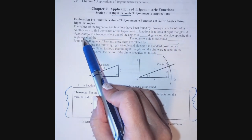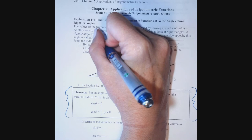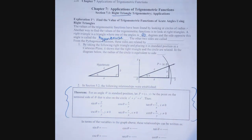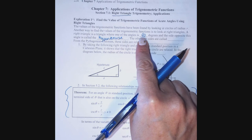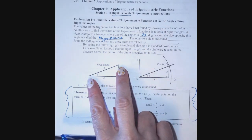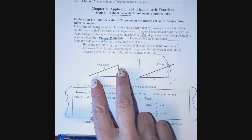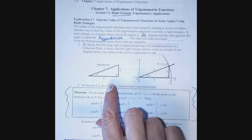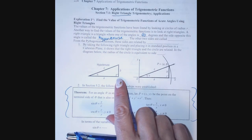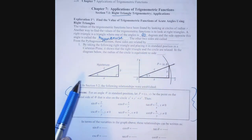A right triangle is a triangle where one of the angles is 90 degrees — a right angle — and the side opposite this angle is the hypotenuse. Because the three angles in a triangle add to 180, when we build a right angle it takes up half the available degrees. So the other two angles split the remaining 90 degrees; they are always complementary and always acute. The longest side is opposite the largest angle, so the hypotenuse is the longest side, and the shortest side is opposite the smallest angle.